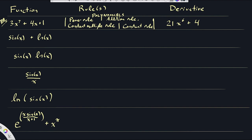For a function like sin(x) plus the natural logarithm of x, the only rule you need is the addition rule. The derivative is the derivative of sin(x), which is cosine(x), plus the derivative of ln(x), which is 1/x.